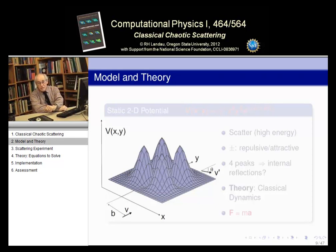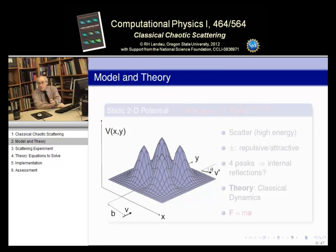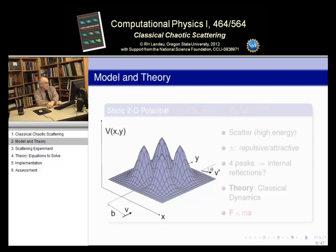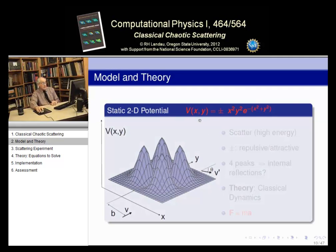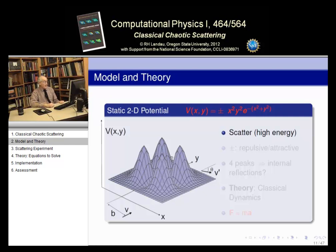We have both a model and a theory here. The theory is very easy. The model is a potential — we have this figure somewhat like the Grand Tetons, and we want this to be our potential that we scatter from. It has four bumps and is a function of x and y — a two-dimensional potential, seen here in three dimensions with the z-direction indicating the height. The equation is a Gaussian in x and y times x-squared and y-squared, giving it peaks in each direction. Scattering is different from bound states: much of what you study, particularly in quantum mechanics, involves bound states like the planets, but here we talk about scattering.